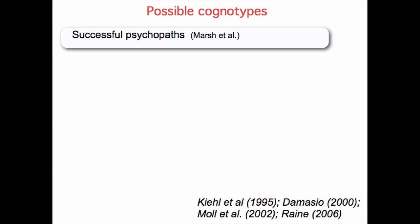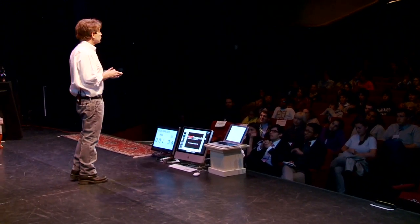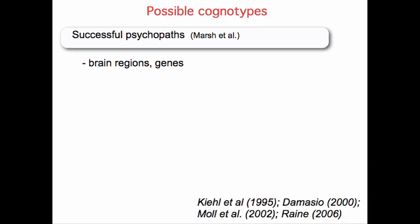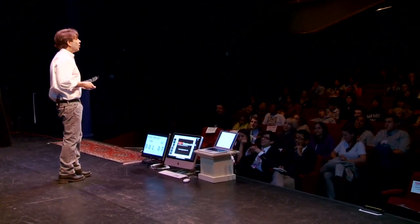One more category of cognotypes: successful psychopaths. By these I do not mean ax murderers — I mean psychopaths whose psychopathy scores fall into a particular range. The brain regions and genes underlying some of this are starting to be uncovered. These are not violent people. Rather, they are charming, verbal, and manipulative, and they seem to lack morals, emotions, and empathy. These people often succeed — they end up as CEOs of companies and elected officials. Often we can look at somebody and can't tell if they would score high on the psychopath scale because they haven't been tested.